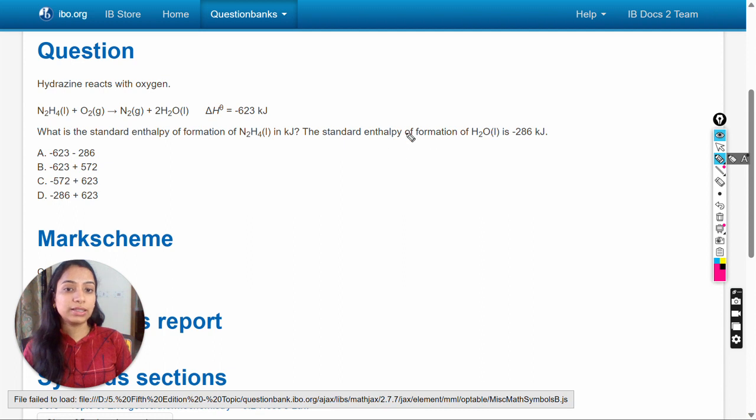To solve this question, we have to use this formula: ΔH° is equal to... This is the standard enthalpy change for the reaction, which is equal to the total enthalpy change for the products minus the total enthalpy change for the reactants.